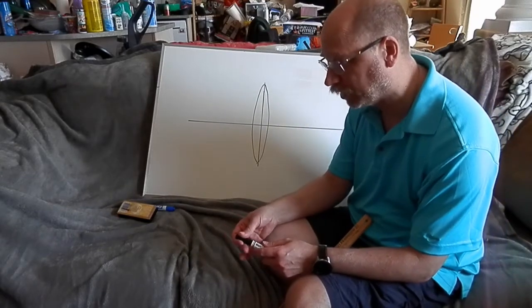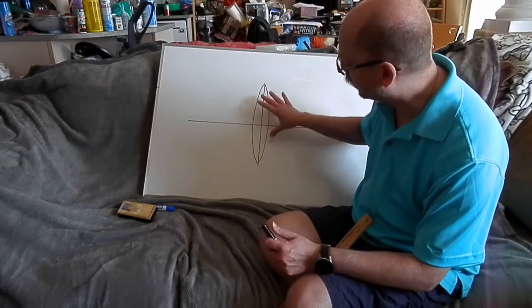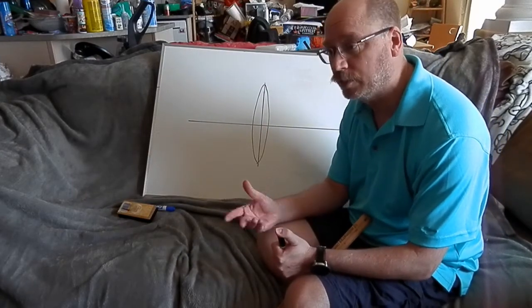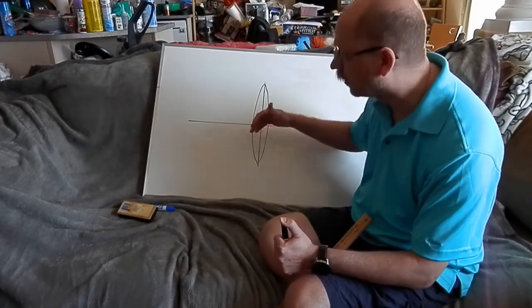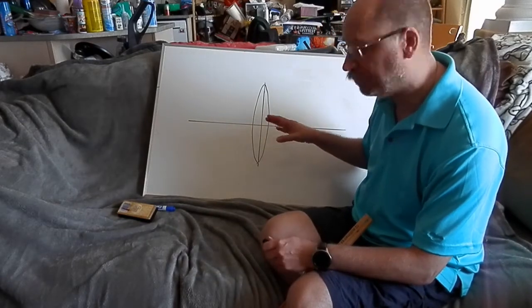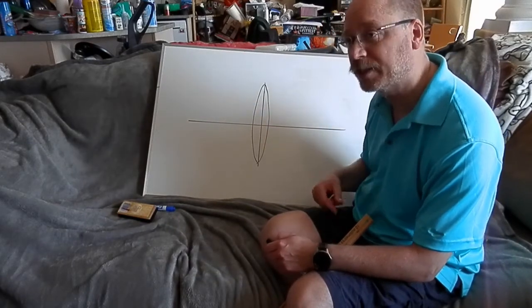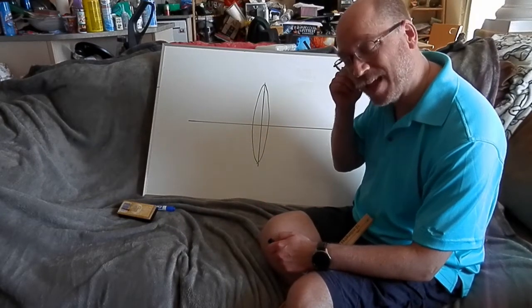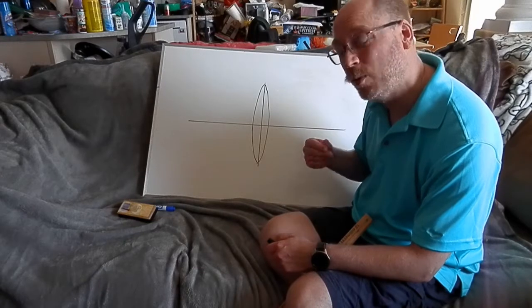But the principal plane is where all of the refracting of light is assumed to occur. Now that's not really realistic because as light travels through the dense optical material that makes up the lens, it'll refract because of the shape of the lens, everything. Like in this case, I'm showing a double convex converging lens.